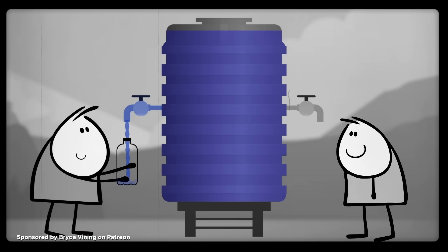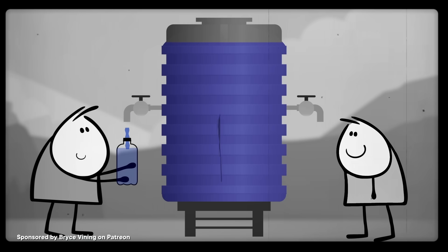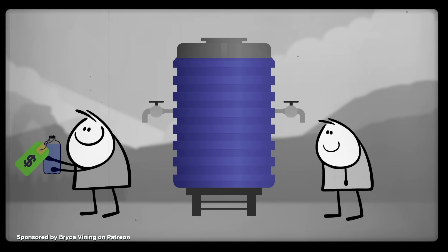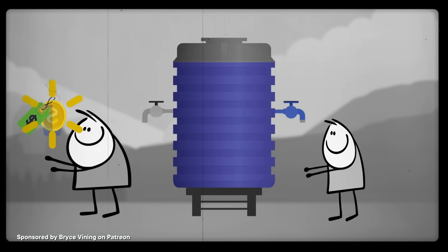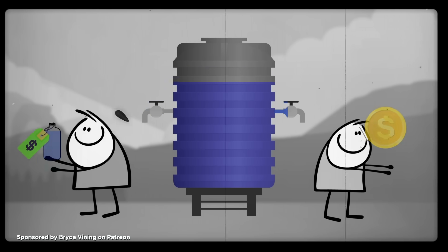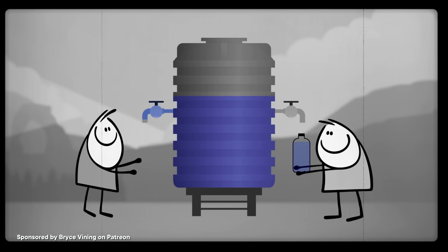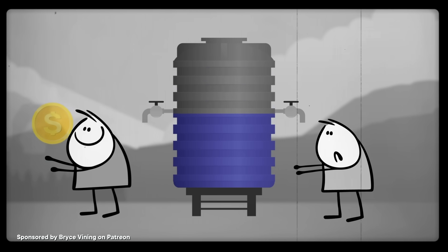In the tragedy of the commons, individuals tend to extract as much as they can from a common resource, improving their own success to the detriment of everyone else with access to it. But when everyone acts in their own best interests, the common resource is destined to be depleted, leading to failure for the entire group. The commons is any shared resource, and its tragedy is the inevitability of a poor outcome for everyone involved.